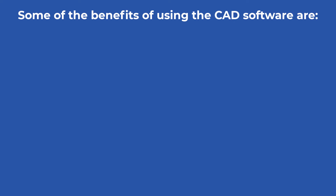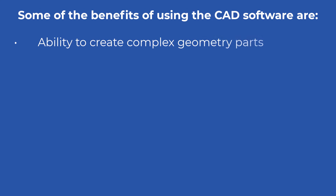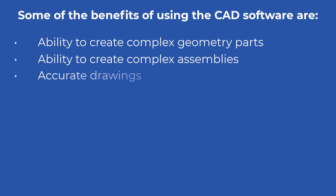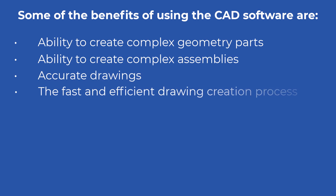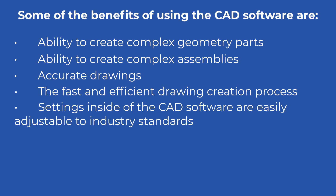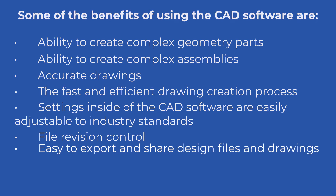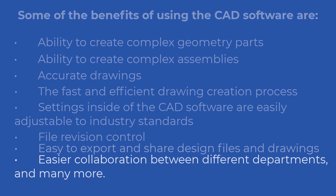Let us dig deeper and examine why these best-in-the-world companies seek these skills. Computer-aided design and computer-aided drafting expedite the new product development process and enhance collaboration between different departments. This results in shortening the time from idea to market and lowering the cost of NPD. Some of the benefits of using CAD software are: ability to create complex geometry parts, ability to create complex assemblies, accurate drawings, fast and efficient drawing creation, settings easily adjustable to industry standards, file revision control, easy export and sharing of design files and drawings, and easier collaboration between departments.